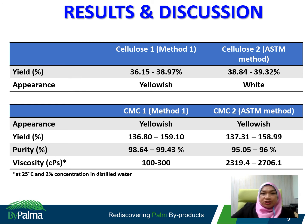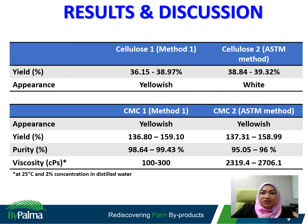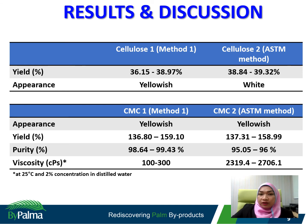The first table shows the cellulose yield by both extraction methods, where Method 1 refers to the chlorine-free method and Method 2 is the ASTM method. The range of cellulose yield between the two methods is not much different. Method 1 yielded 36% to 39% while the ASTM method yielded about 39%. However, the cellulose extracted by the chlorine-free method appeared yellowish compared to the white cellulose from the ASTM method. The second table shows that the CMC yield is quite similar for both methods, and the physical appearance is also similar, being yellowish in color.